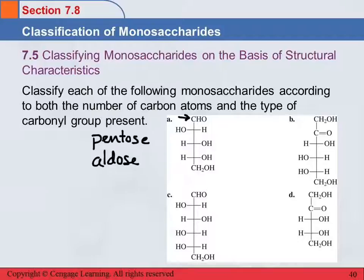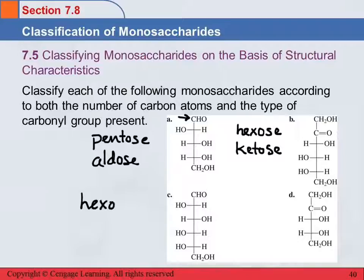What about B? It has six carbons, so that makes it a hexose. Is it an aldose or a ketose? It's a ketose, because the carbonyl group is not at the end — it's on the second carbon. How about C? Six carbons again — hexose. Aldehyde, so this is an aldose.